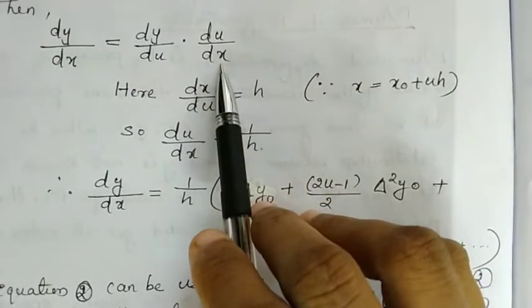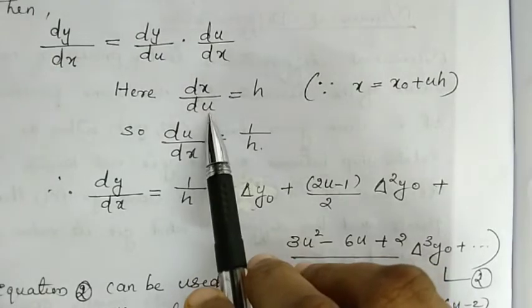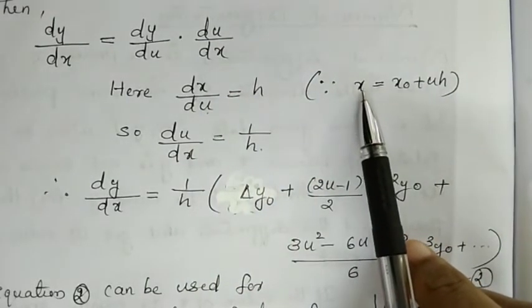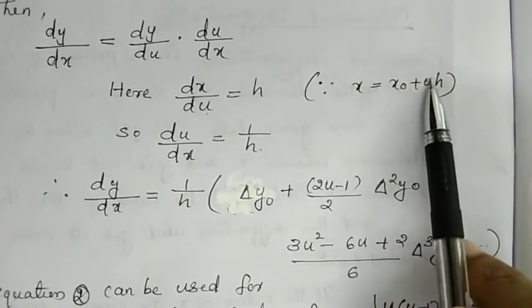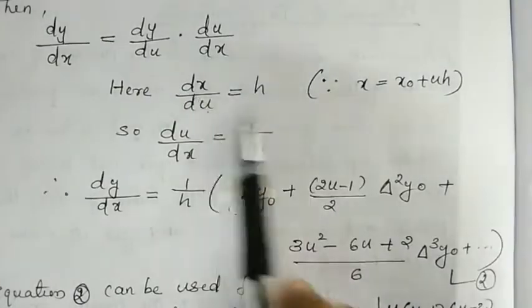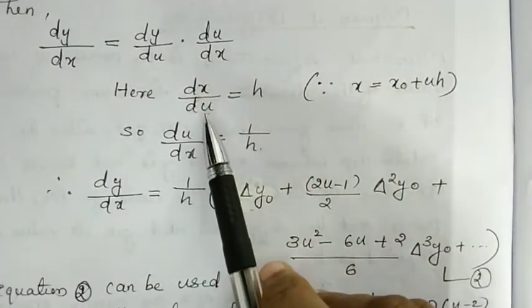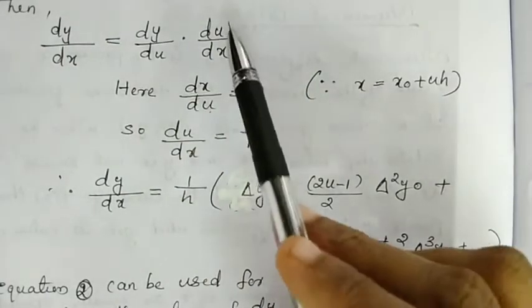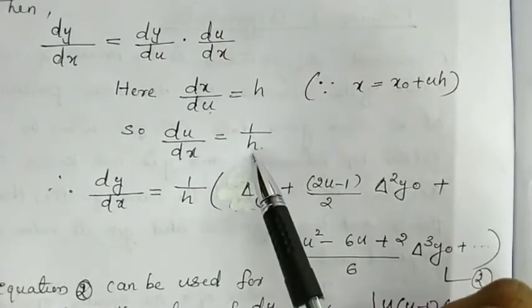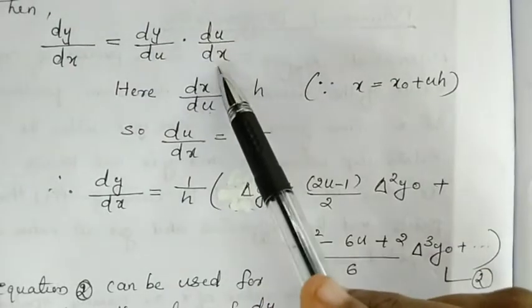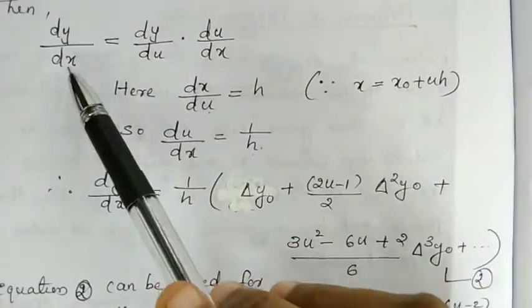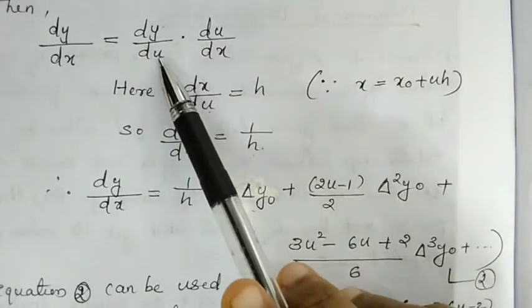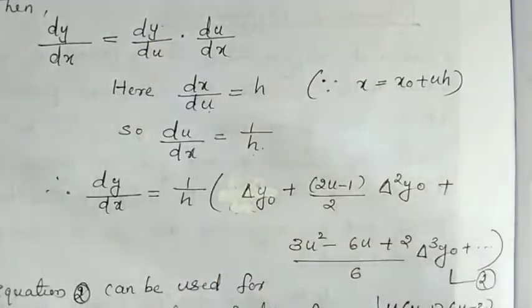Differentiating x = x₀ + u·h with respect to u gives dx/du = h, so du/dx = 1/h. Therefore dy/dx = (1/h) · dy/du. We then differentiate the y expression with respect to u.